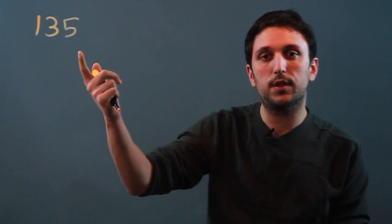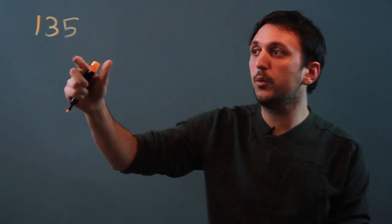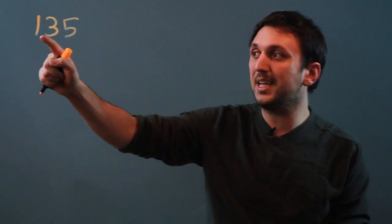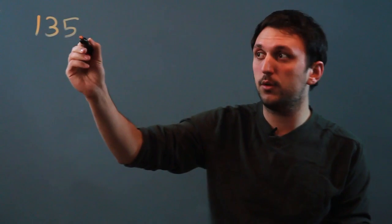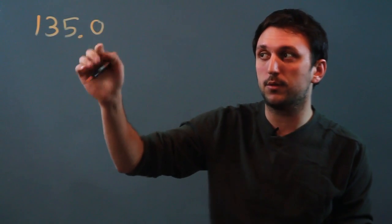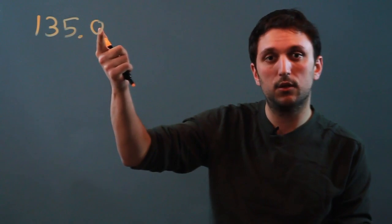So let's look at the number 135. Now in order to convert this into scientific notation, we want the decimal place to be after the 1. Right now we have 135.0. You never have to write it like this, but that would be true.